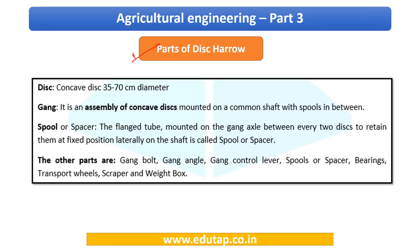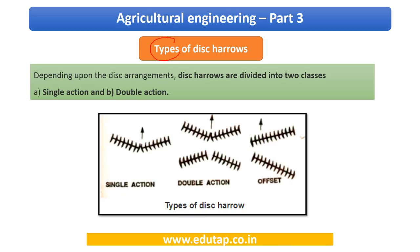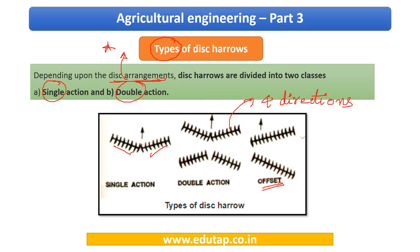Based on disc arrangement, disc harrows are divided into two main classes: single action and double action — with a third category called offset. In single action, there are two gangs placed end to end at an angle greater than 90 degrees, arranged in opposite directions — one throws soil right, the other left. In double action, there are four gangs all arranged in opposite directions, so operations occur in four directions and the entire field is worked twice in each strip.